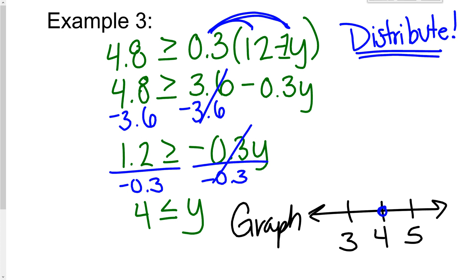This one is a closed circle because it is equal to. It is 4 is less than or equal to y. So 4 is less than or equal to y. That means y has to be greater.